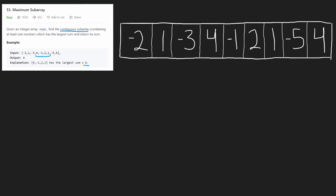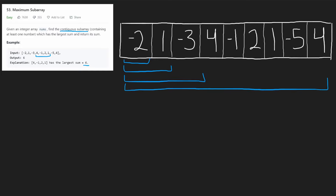The first thing you might try is just compute every single subarray. So let's first compute every single subarray starting at negative two — there's one subarray, two subarrays, three subarrays — and we keep doing that until we get to the end. Then we could repeat the process for the second number: subarrays starting at one, all the way until the end. We could repeat that same process for every number in the array.